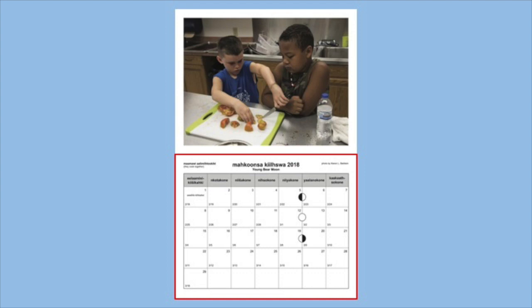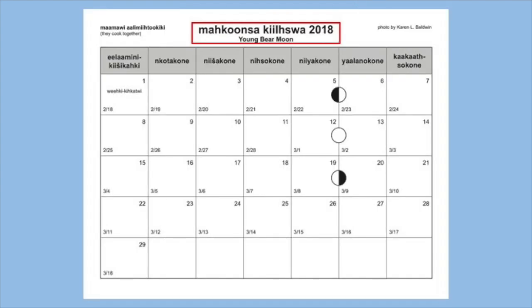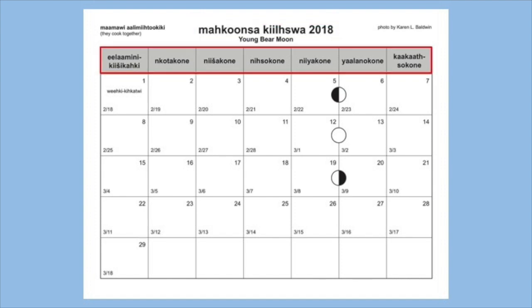On the page beneath the picture for Makunza Kilsua, you will find the section of the calendar that tracks the 29 days of this lunar month. At the top center of the page, you will find the month name and its English translation. In the gray boxes beneath the month name are the days of the week, beginning with Alamene Kishikake, Sunday, on the left, and ending with Kakatsukone, Saturday, on the right. Each month follows the same organization.